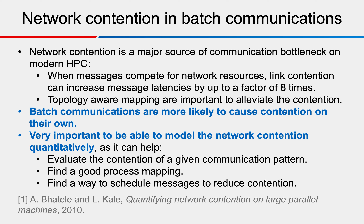For batch point-to-point communications, network contention can be very severe. Network contention is a major source of communication bottleneck on modern HPC systems. Literature shows that when messages compete for network resources, link contention can increase message latency by up to a factor of eight. Topology-aware mapping can help alleviate contention, and batch communications are more likely to cause contention. It is therefore very important to model network contention quantitatively to evaluate contention, find good process mappings, and schedule messages to reduce contention.